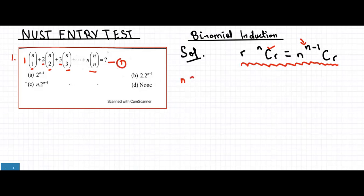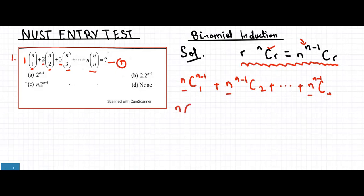We can rewrite the expression as n·(n-1)C1 plus n·(n-1)C2, and so on till n·(n-1)Cn. We can clearly see that n is common in every term, so we can factor it out and write: n times [(n-1)C1 plus (n-1)C2 plus so on till (n-1)Cn].